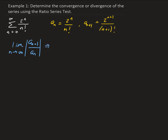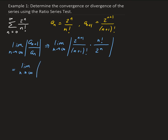This is going to give us 2 to the (n+1) divided by (n+1) factorial. And since we're dividing by the nth term, I'm going to take the reciprocal of the nth term, which gives us n factorial over 2 to the n. Since we don't have any negative values involved, we can just drop the absolute value. I'm going to group the exponential functions together and the factorials together: 2 to the (n+1) over 2 to the n, times n factorial over (n+1) factorial.